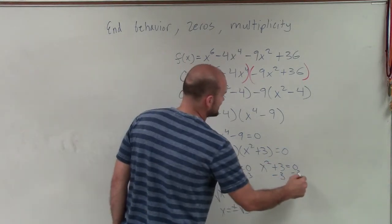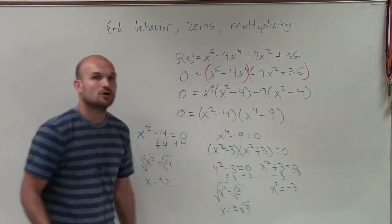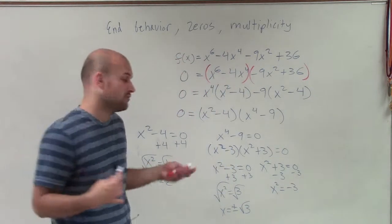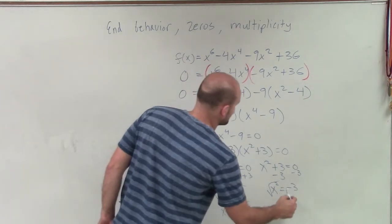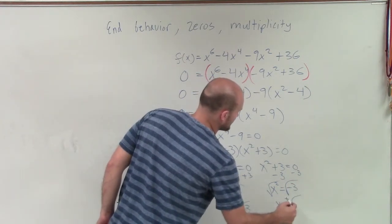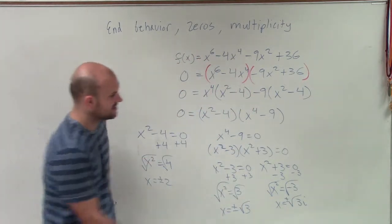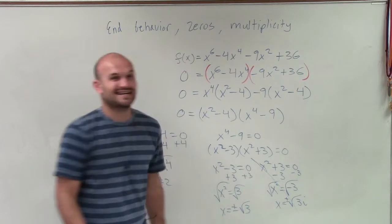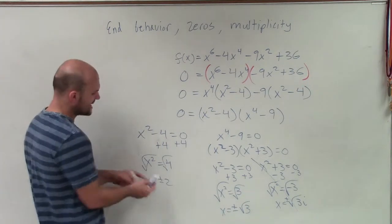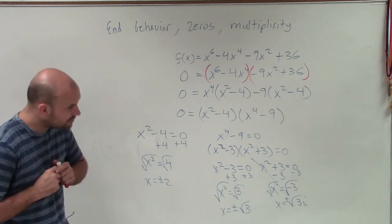Over here, when I subtract a negative 3, I'm now going to have to take the square root of a negative number, which is impossible under our real number system. I'll show you what the imaginary will be, but we're not going to talk about imaginary numbers in this unit, but just so you know it. What we like to say is just it does not exist. Therefore, I have two zeros: x = ±2 and x = ±√3.